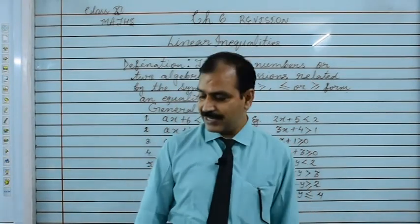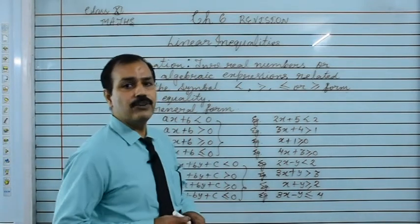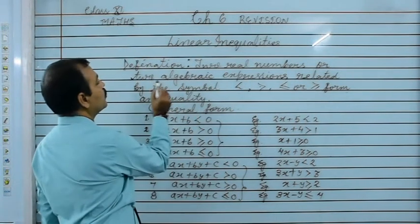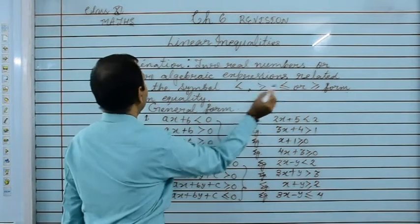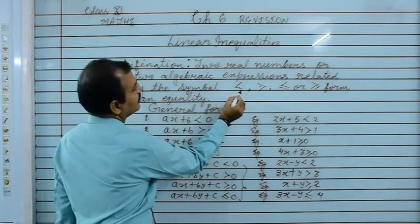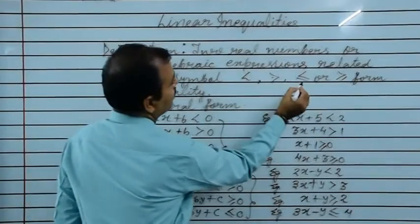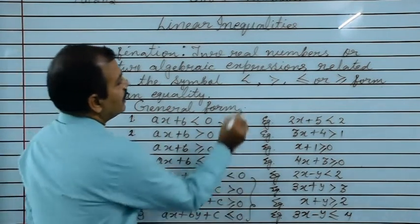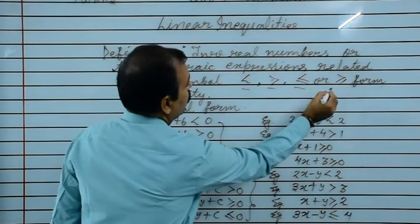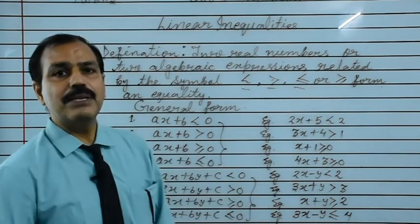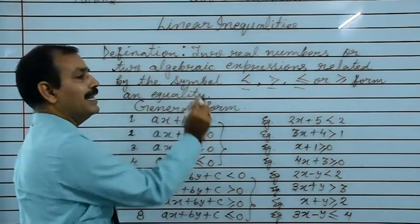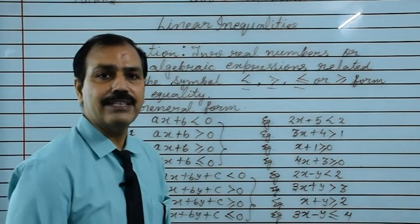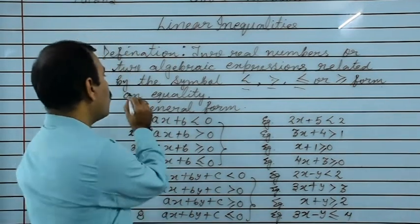What do you mean by linear inequality? Definition: two real numbers or two algebraic expressions related by the symbols less than, greater than, less than equals to, or greater than equals to form an inequality.